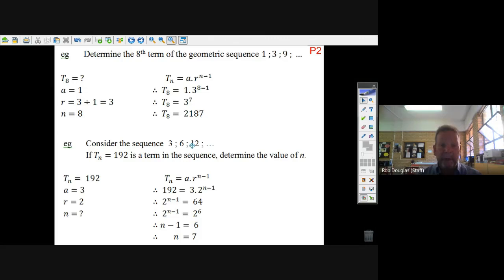Here's another sequence: 3, 6, 12. a is 3. If Tn equals 192, we know some term equals 192 but we don't know what n is. So Tn = 192, a is 3, and r is 6 divided by 3, which is 2. Now the key with this one is you divide both sides by 3. 192 divided by 3 is 64. Now we're working with exponents. There's a key thing here: you try to get things into powers of primes.